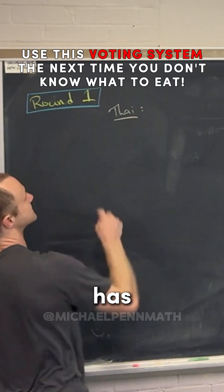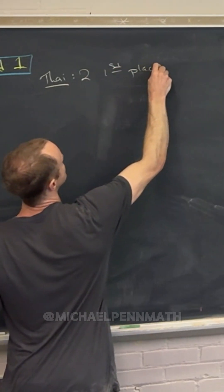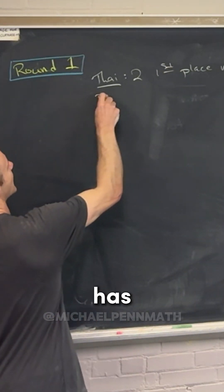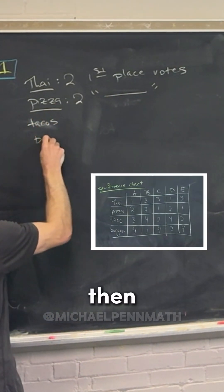Thai has how many first place votes? Two. So two first place votes. And then pizza has how many first place votes? It's also two.